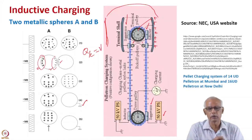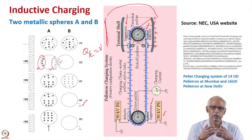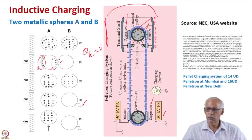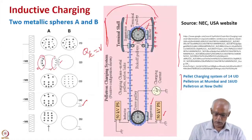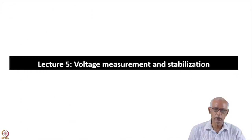Nowadays, some tandem accelerators are also using inductive charging. The difference between tandem and Pelotron was because of charging only. So those tandems which are getting converted into Pelotrons because of this inductive charging, their stability is also improved. These details are given by NEC — National Electrostatic Corporation, USA — since these Pelotrons are manufactured by them.